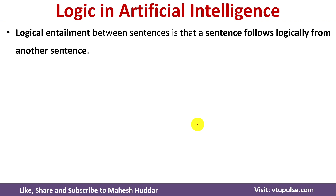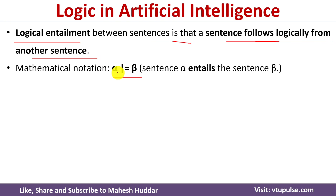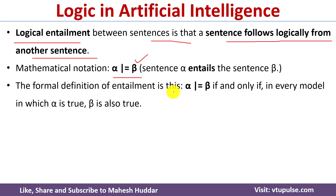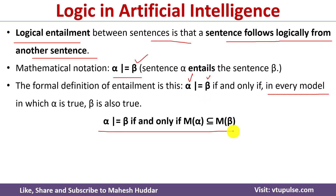We will now define logical entailment. Logical entailment between two sentences means that a sentence follows logically from another sentence. Mathematically, alpha logically entails beta if and only if in every model where alpha is true, beta should also be true. If that is the case, we say alpha logically entails beta.